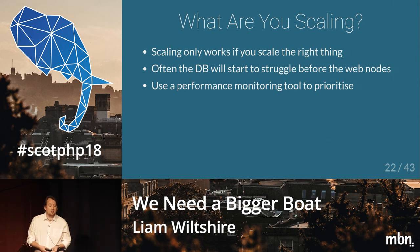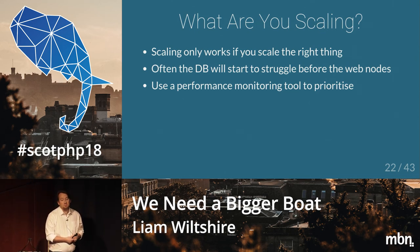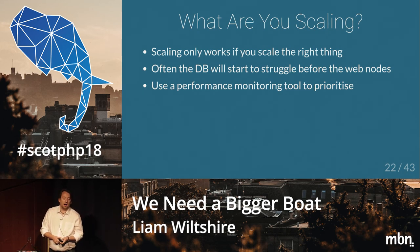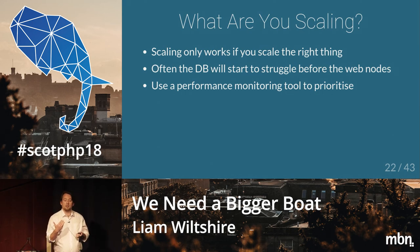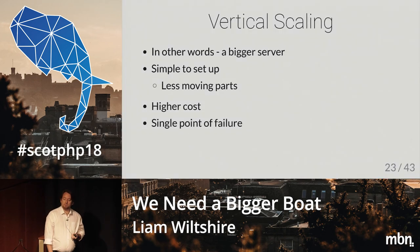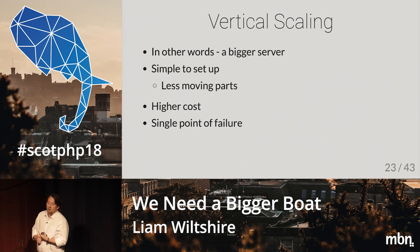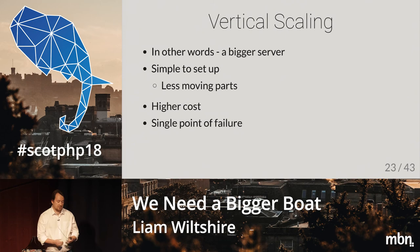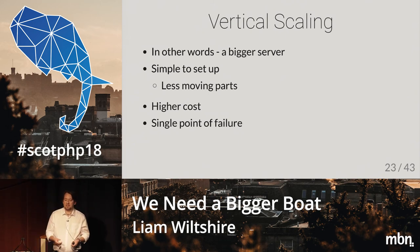As a general rule, your DB will start to struggle before anything else, unless you've got some super ninja DBA. Use a performance monitor tool like New Relic to prioritize the quick wins and find the big problems. When we talk about scaling, there are normally two things we can do. We can do vertical scaling — basically, vertical scaling is a fancy word for bigger servers. You've got a server with 32 gig of RAM, you vertically scale by binning that server and getting one with 64 gig of RAM. Done.